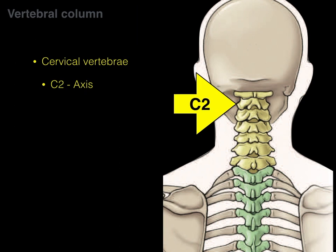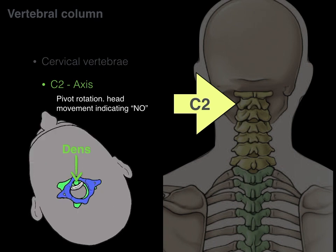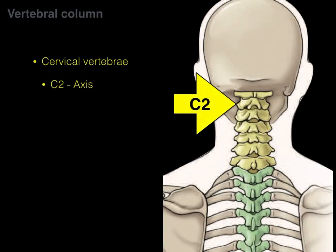Next is C2, also known as the axis. In a superior view, there's the axis vertebra with C1. The dens is a superior projection from C2 that allows pivot rotation — an axis — allowing you to do the 'no' shaking movement of the head.